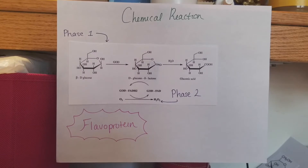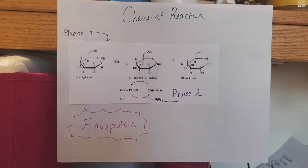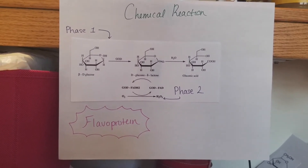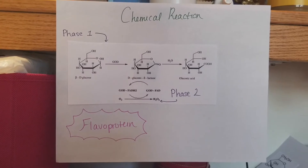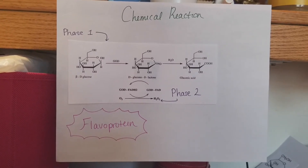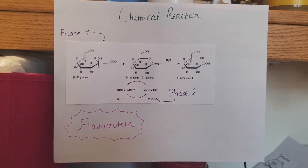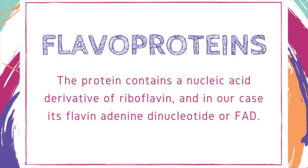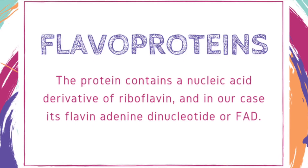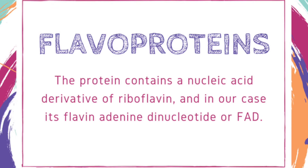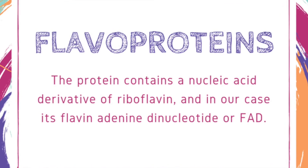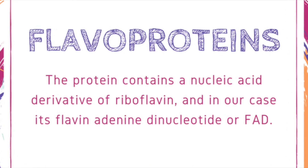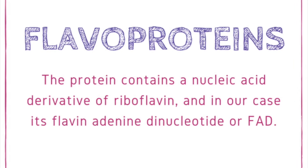In the second phase, glucose oxidase gets re-oxidized back and FADH2 gets turned into FAD again, and in the process oxygen, our electron acceptor, gets reduced to hydrogen peroxide. Because our glucose oxidase contains FADH2, which is a derivative of riboflavin, our enzyme is also known as a flavoprotein.